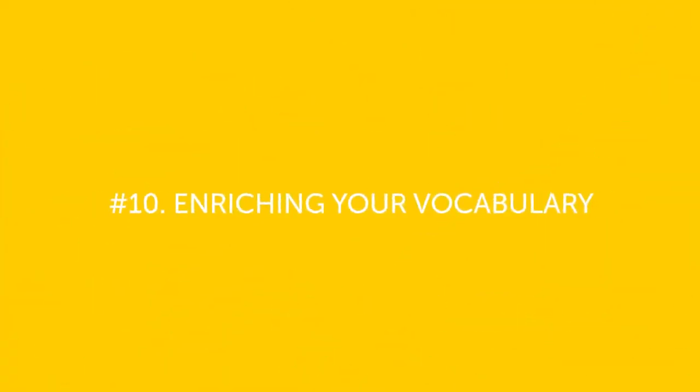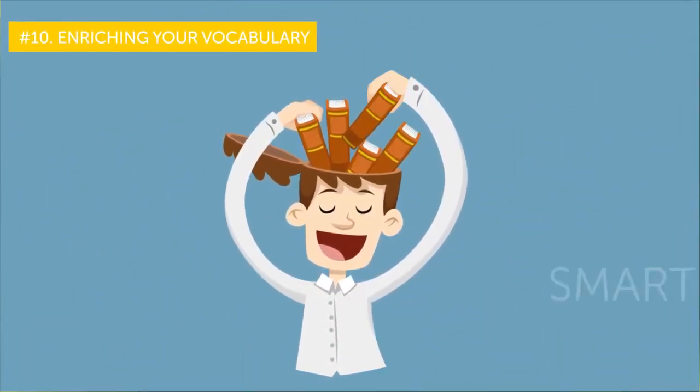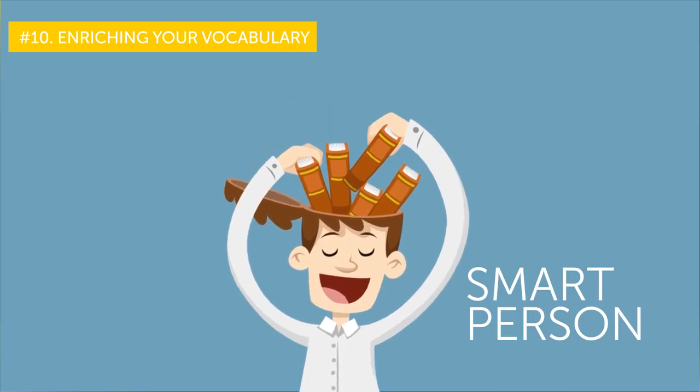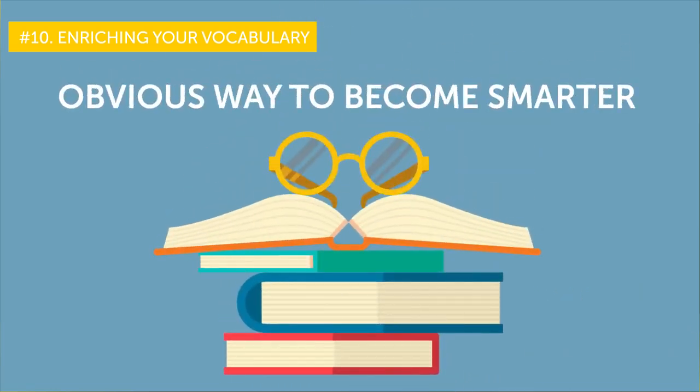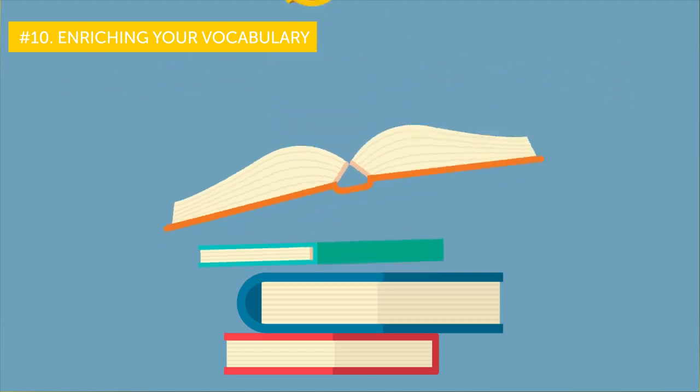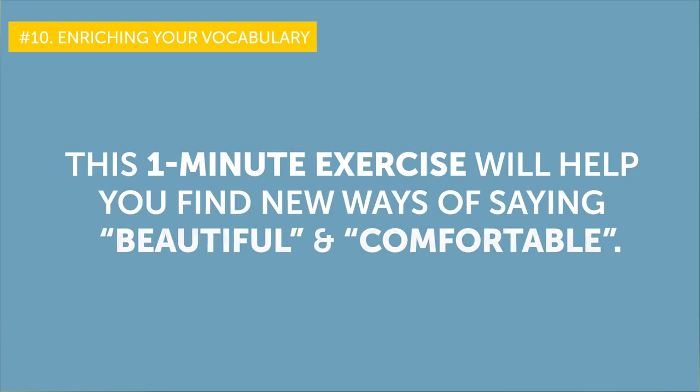Coming down from number 10, enriching your vocabulary. A rich vocabulary is a sign of a smart person, isn't it? Reading books is an obvious way to become smarter. However, not all of us honestly have time for that these days. Here's a solution. This one-minute exercise will help you find new ways of saying beautiful and comfortable. Look around.